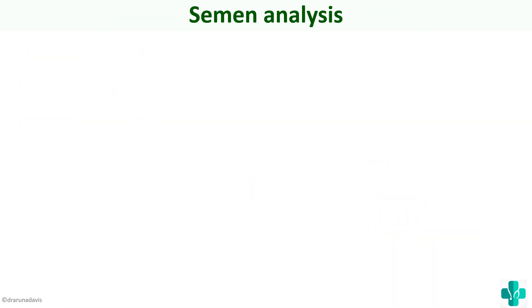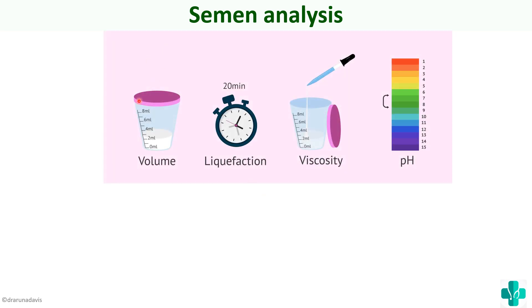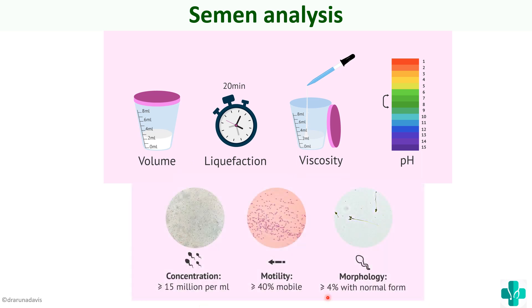Semen analysis is a very important topic from an examination point of view. We have to look for many characteristics of semen: adequate volume, liquefaction time, viscosity, pH, as well as concentration, motility, and morphology. Concentration means the amount of sperm per ml — it should be at least 15 million per ml. Motility should be at least more than 40% with forward motility, and morphology should be normal.